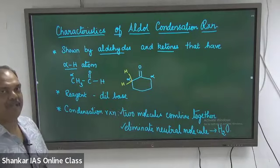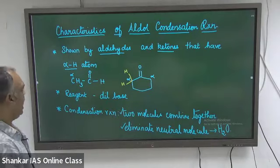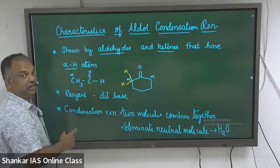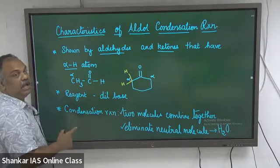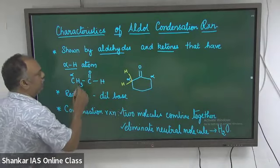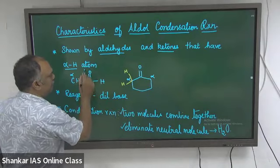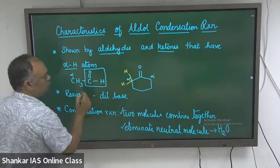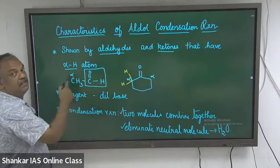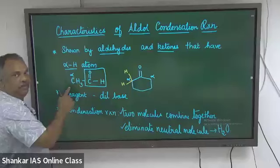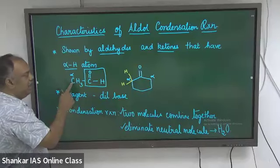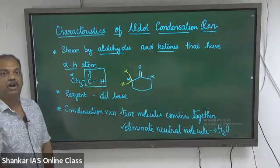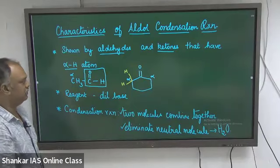What is an alpha hydrogen atom? Alpha hydrogen atom is a hydrogen atom that is present on the alpha carbon. To identify an alpha carbon, first look at the functional group. The carbon adjacent to the functional group is the alpha carbon, and the hydrogen present on this alpha carbon is called the alpha hydrogen.